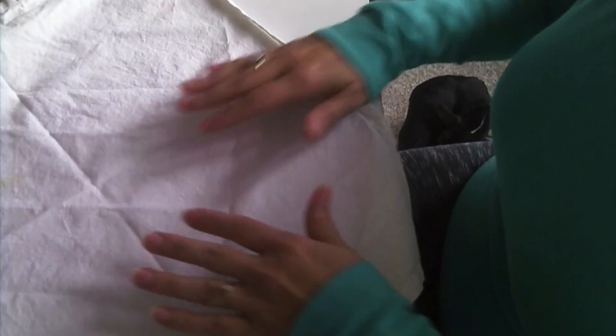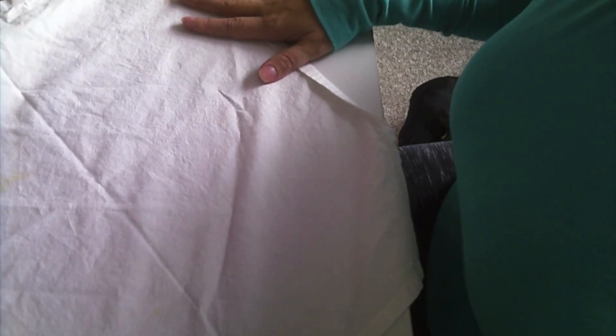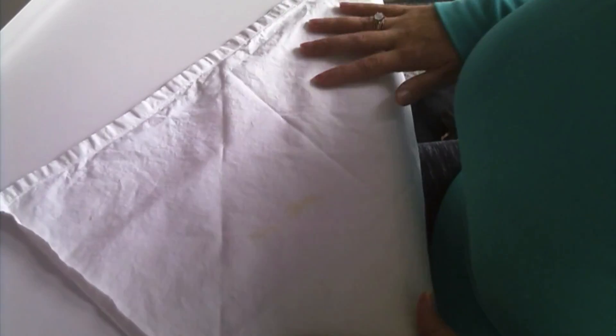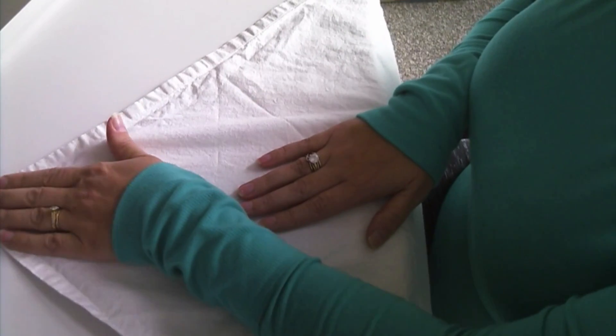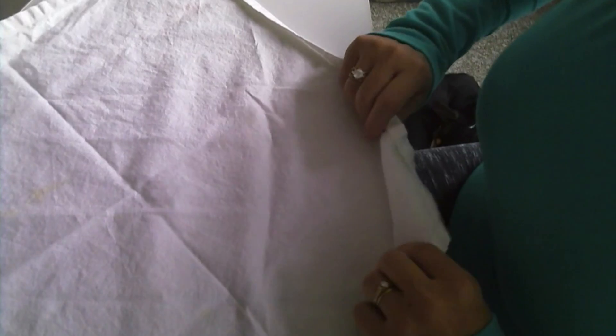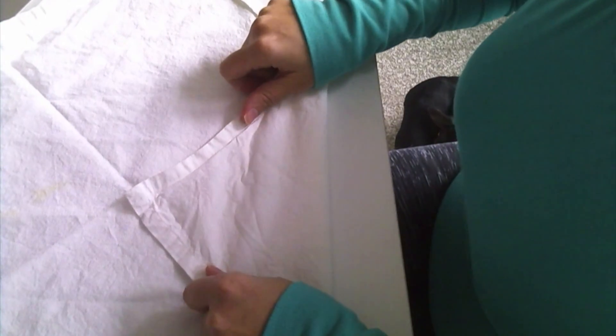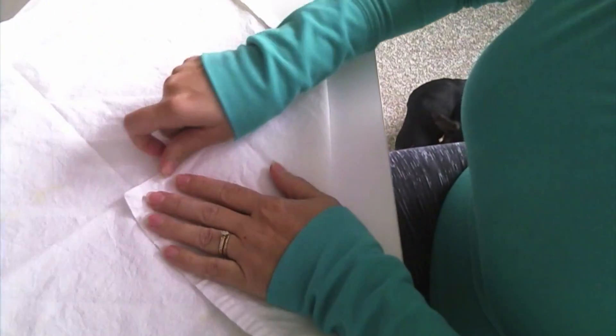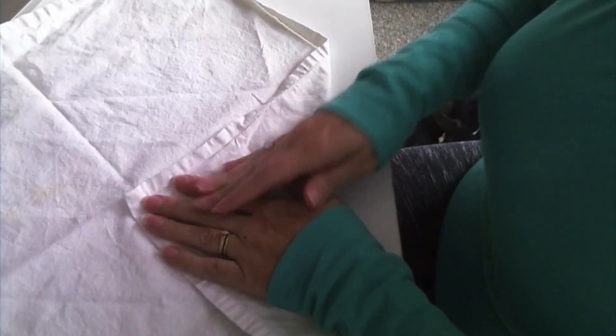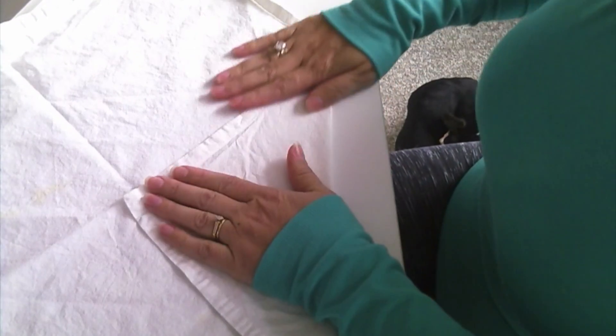I'm just going to lay it out flat so that the top corner is opposite of me and then the bottom corner is facing like my belly button area. I'm going to take that bottom corner, pull it up, and place it about right in the center. Just make sure that my fold is nice and neat.